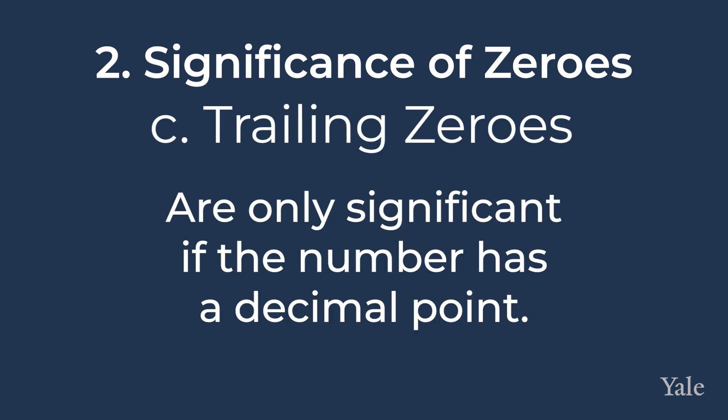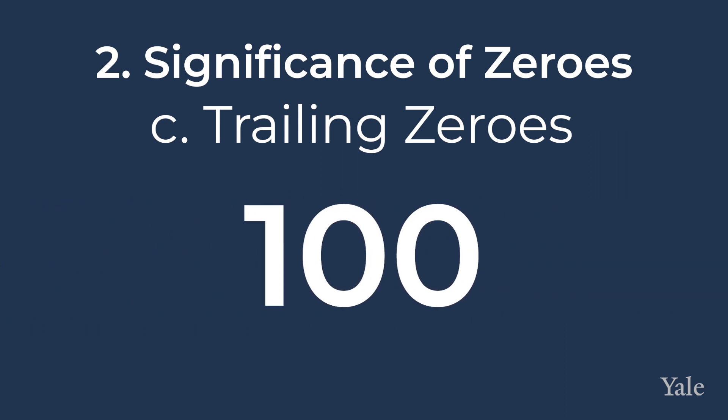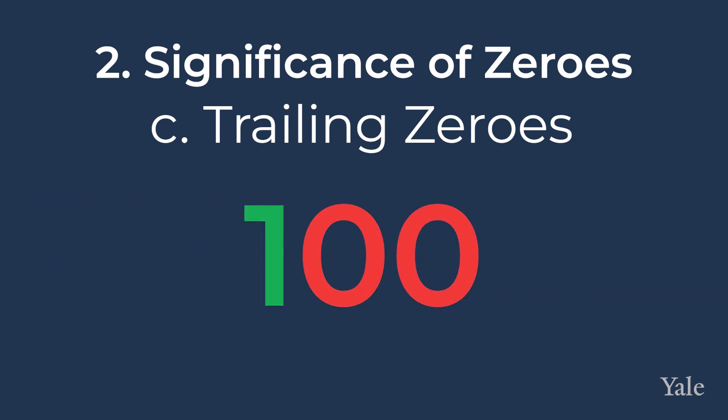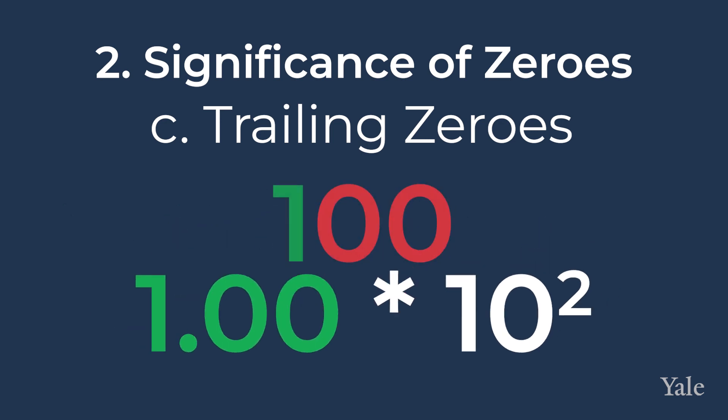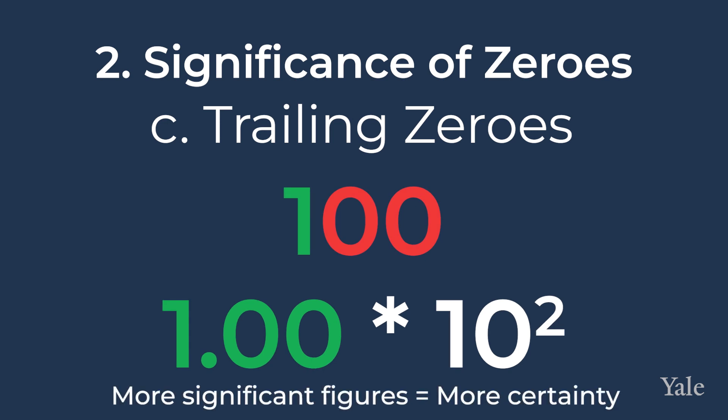Trailing zeros only count if the number has a decimal point. So 100 has one significant figure, but 1.00 times 10 to the second power, which is equal to 100, has three significant figures. So in the second example, we are more sure that 1.00 times 10 to the second power is exactly 100. 1.00 also has three significant figures.